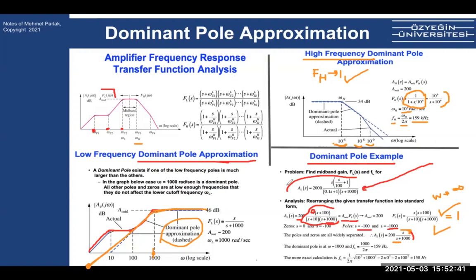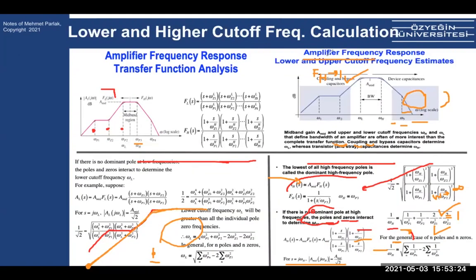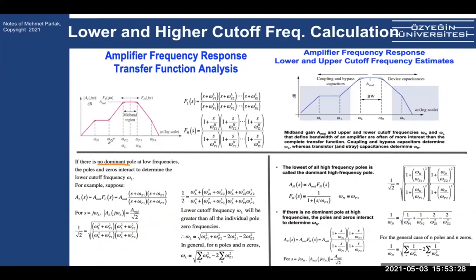If there is no dominant pole — if the poles are close to each other — we use the exact formula. To find the lower cutoff frequency ω_L, you use: ω_L = √(ω_P1² + ω_P2² − 2ω_Z1² − 2ω_Z2²). You identify the poles and zeros from the Bode plot, plug them in, and take the square root to get ω_L.